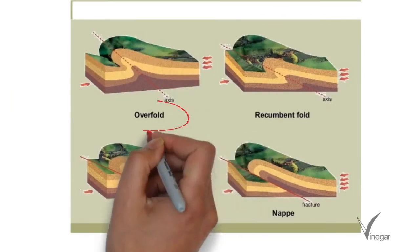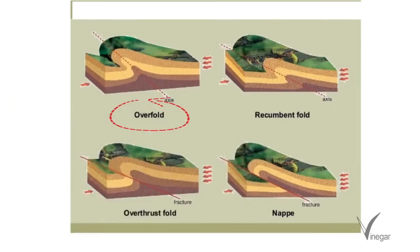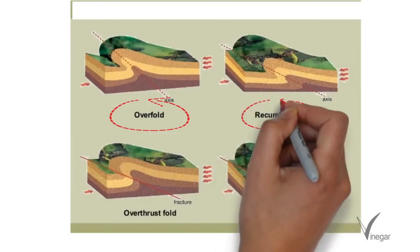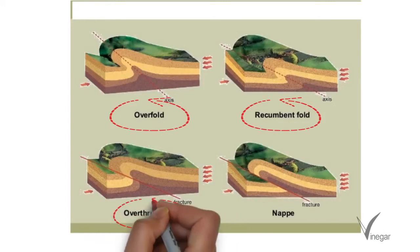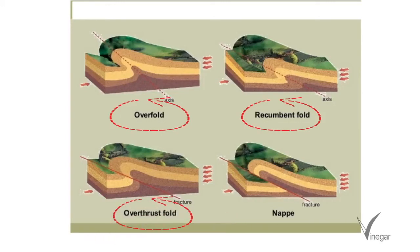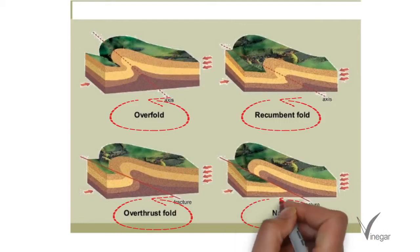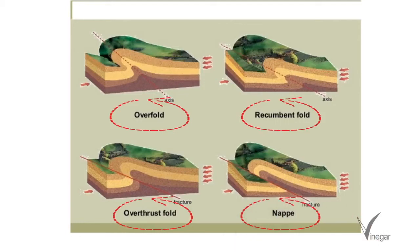If folding progresses too far, it is known as an overfold. If it progresses even further, it is known as a recumbent fold. In some extreme cases, fractures are developed and such folds are known as overthrust folds. The overriding portion of the thrust fold is known as a nappe.